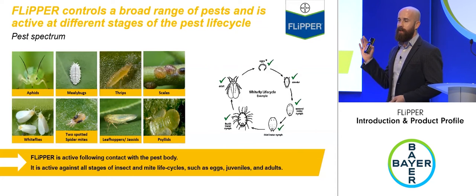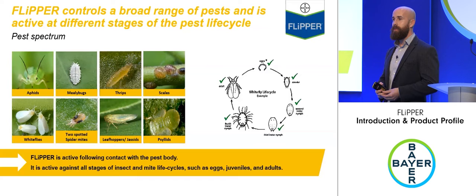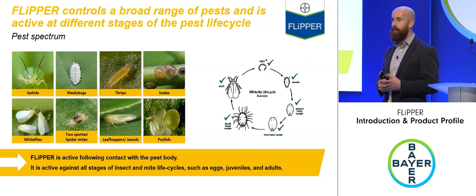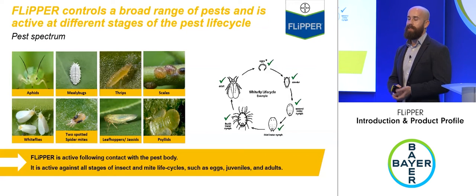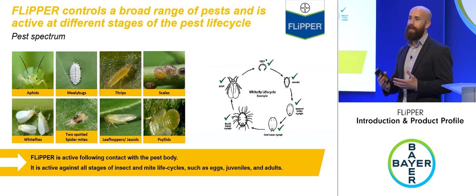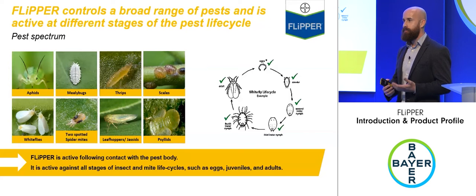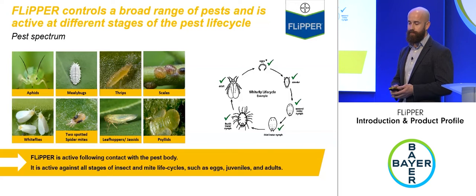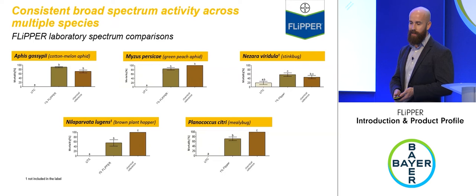Many of these pests are resistant to conventional chemistry like pyrethroids and neonicotinoids. We've tested Flipper against aphids with a whole raft of resistance mechanisms, and found there's no cross-resistance — Flipper is as active on a resistant aphid as on a sensitive one. This gives it a great place in insect programs built with resistance management in mind.